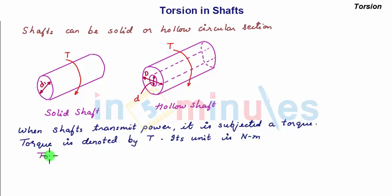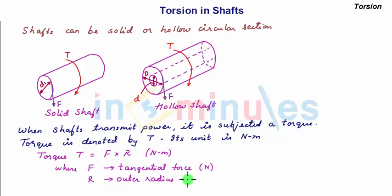So torque T is given as F into R Newton meter, where F is your tangential force on the shaft in Newton as shown in the figure, and R is the outer radius of shaft in meters.